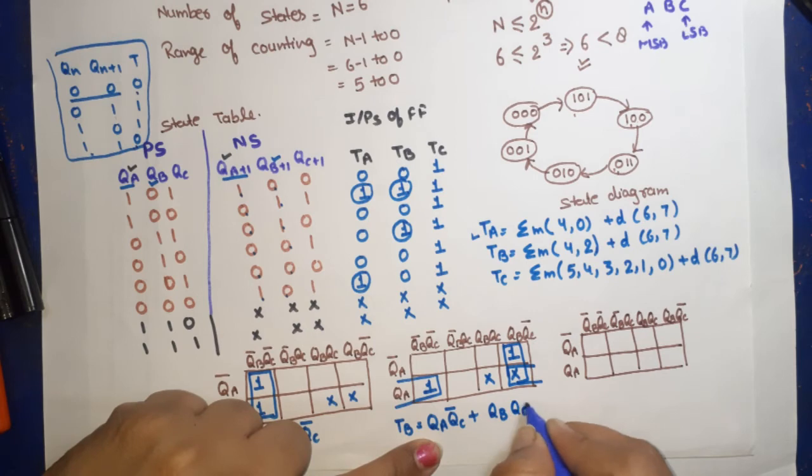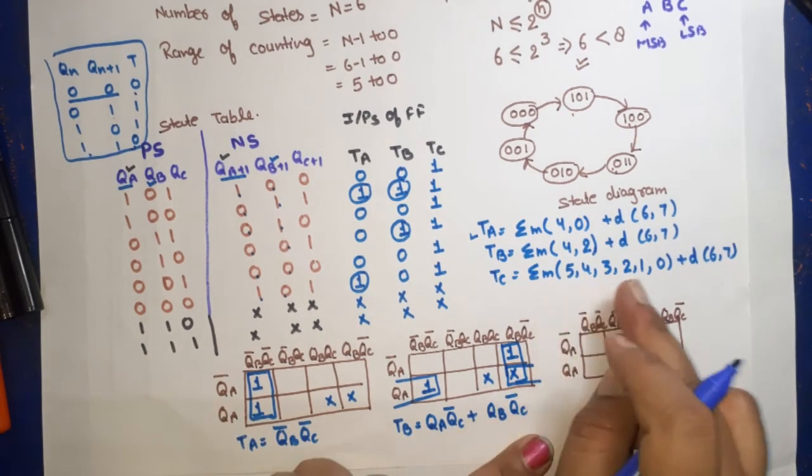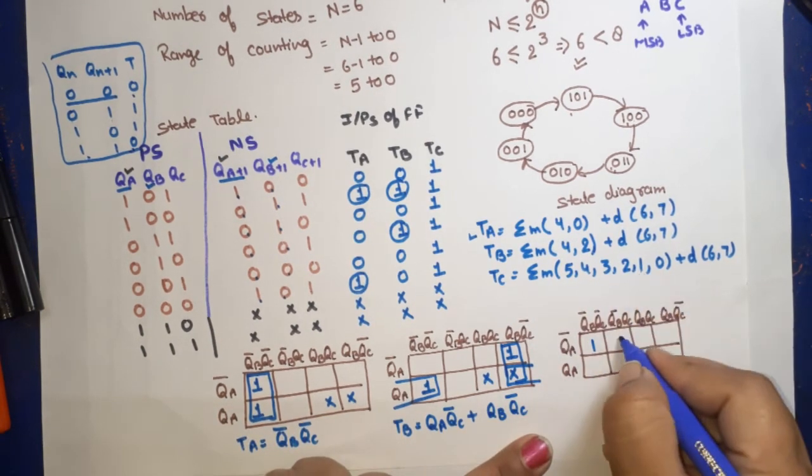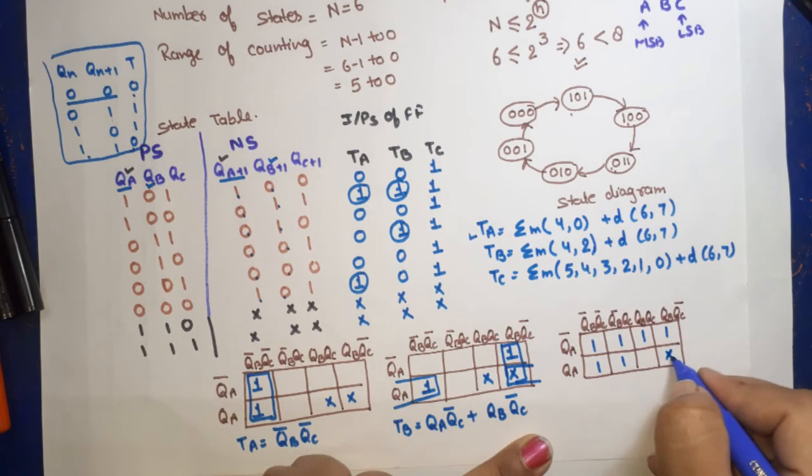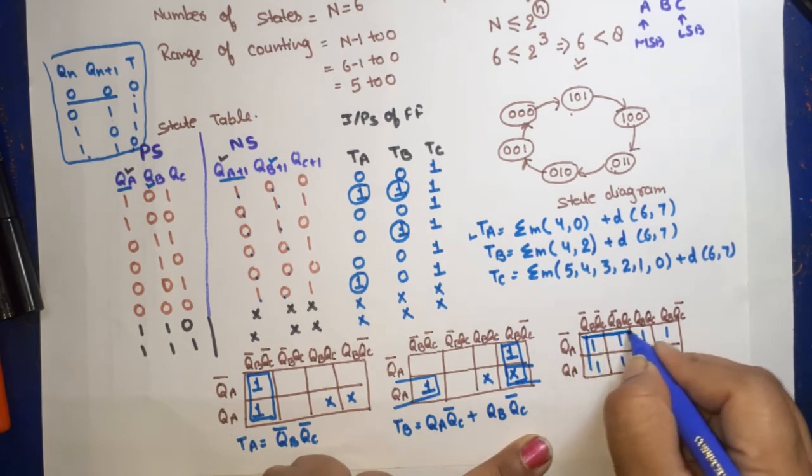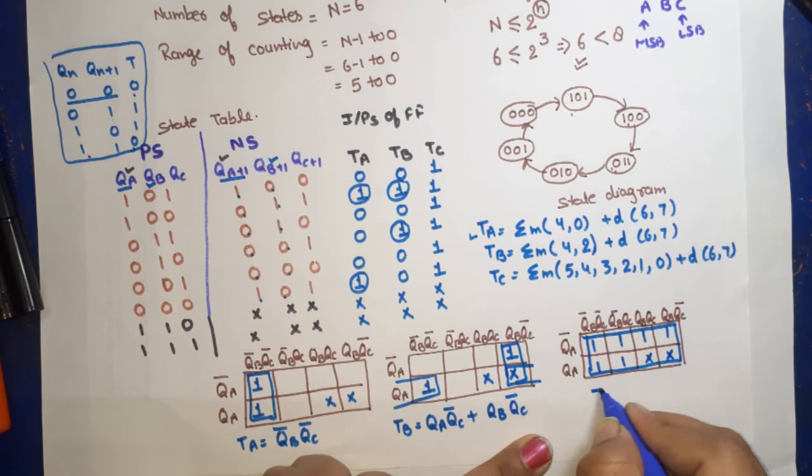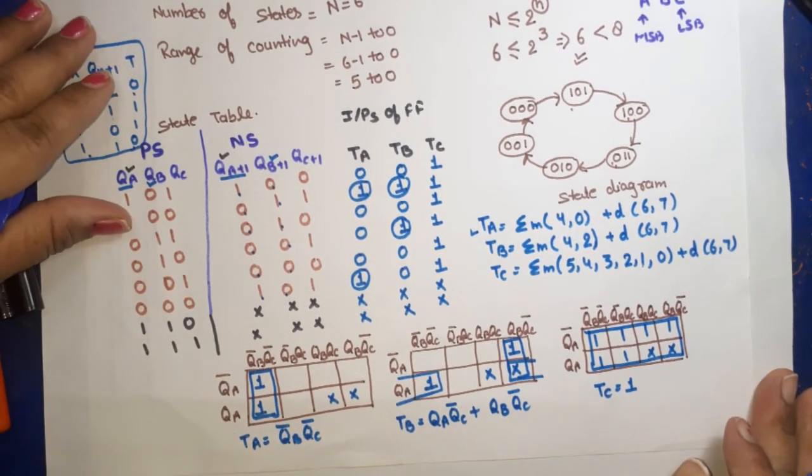For TC, we have 0, 1, 2, 3, 4, 5, plus 6 and 7 as don't care. An octad is formed, so TC will be equal to 1.